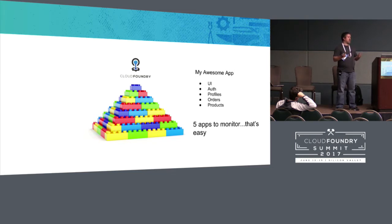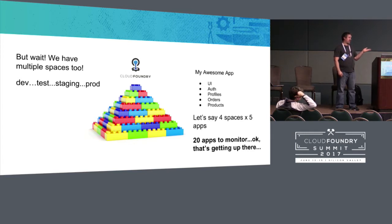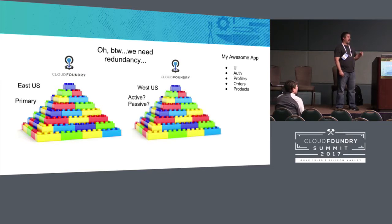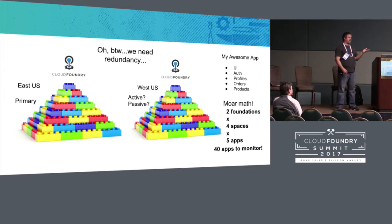But you probably have a dev space, test space, staging, prod, and maybe a few other spaces for one big application. So now you have four spaces and five apps — that's 20 apps to monitor. Then once you start worrying about redundancy, maybe you want two, three, four, five foundations across the globe. All of a sudden you have a microservice sprawl. You have X many foundations times X many spaces times X many apps — in this case 40 apps to monitor. Logging into two foundations across different spaces becomes a full-time job.